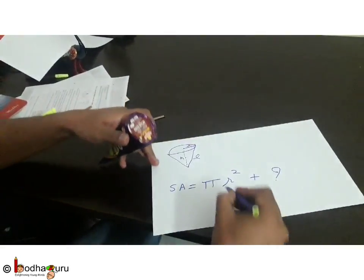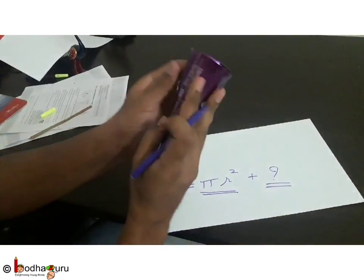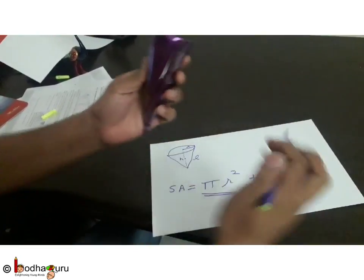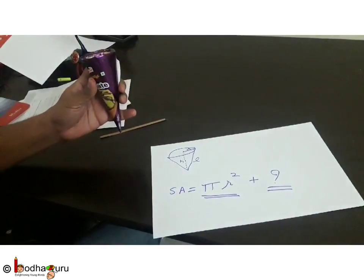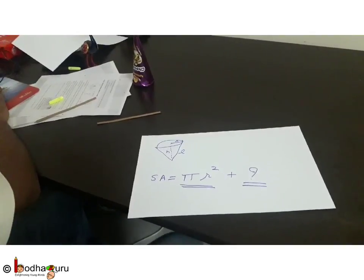Area of the circle, which is this. And this, the second part, which is the area of this portion, we will calculate in the next video. Thank you.